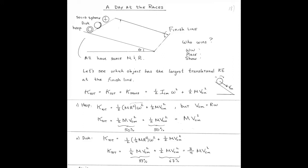So we've covered rotation, we covered moment of inertia, and we covered the concept of rolling. So here I have a problem. I have a hoop, a disc, and a sphere.